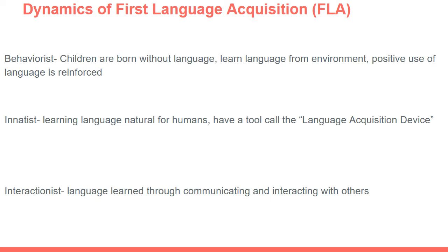For example, many times children begin by babbling, trying out different phonemes or sounds. But when they start using real words, parents get very excited and encourage those real words. Because children are rewarded and praised for positive language use, they conceptualize that those words are correct, while babbling that adults ignored was not important. Basically, children learn from adults and older siblings what kind of language is valued.